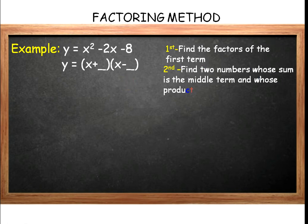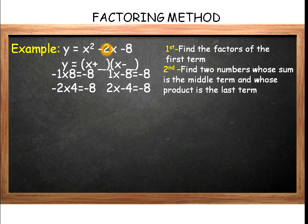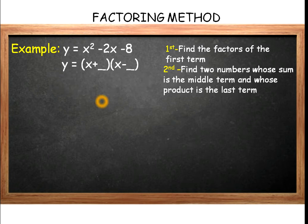two numbers whose sum is the middle term and whose product is negative 8. Since it's a negative number, we can deduce that one number is positive and the second number is negative. Among the possible factors, we need the pair that gives a sum of negative 2, and that will be 2 and negative 4, since 2 times negative 4 is negative 8, and 2 plus negative 4 equals negative 2.